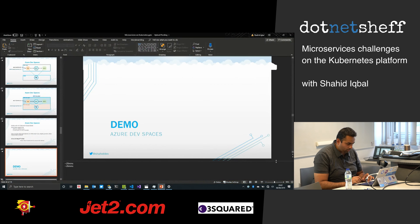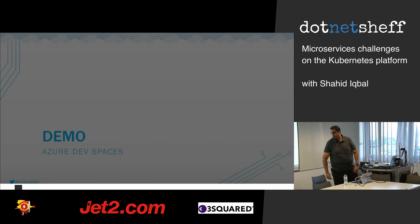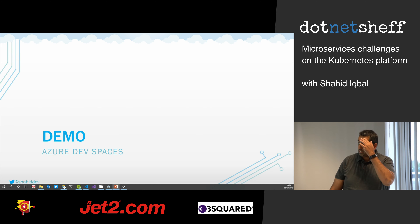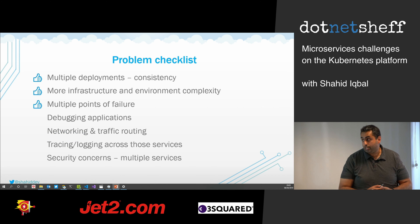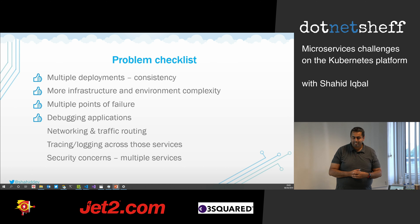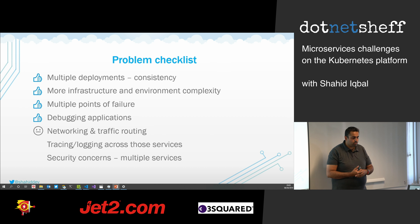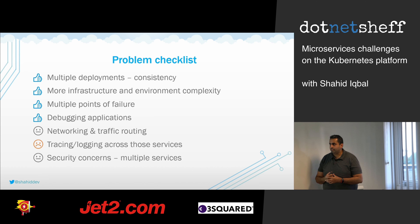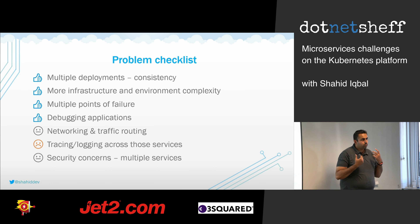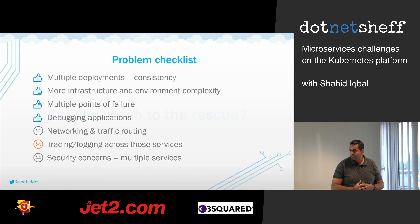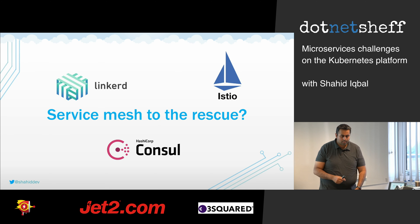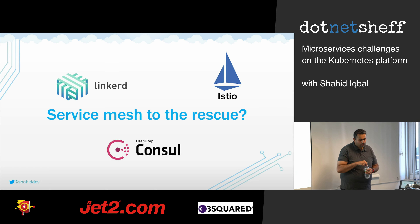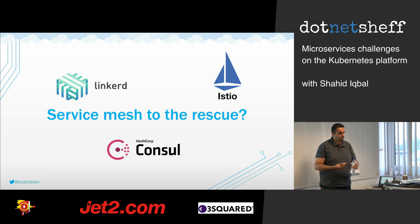Back to the checklist — debugging applications: we've shown we can do some quite interesting things there. Networking traffic routing, tracing, and security still need addressing. With these three elements, essentially what we're talking about is network management between services — and this is where service meshes come to the rescue. Service meshes are a really hot topic, and much like Kubernetes, people are jumping to adopt them even though they're probably not ready. Please don't rush into it.